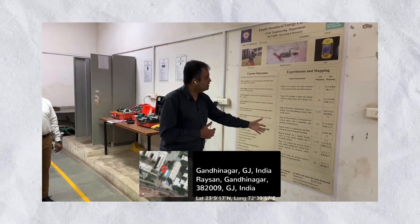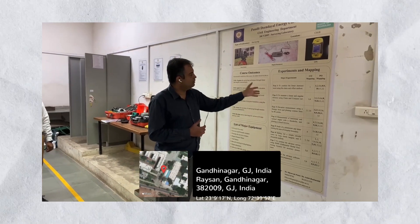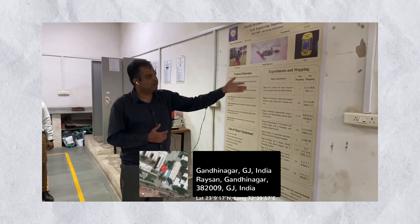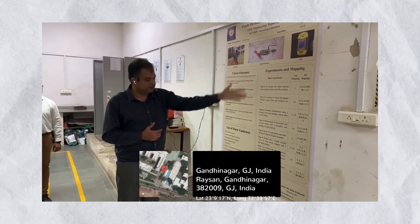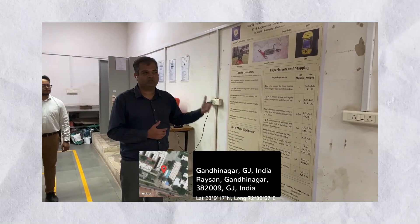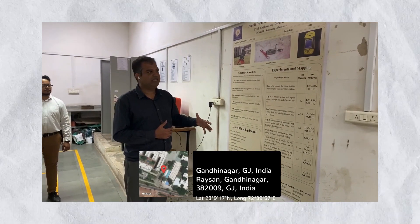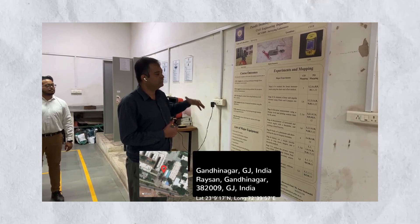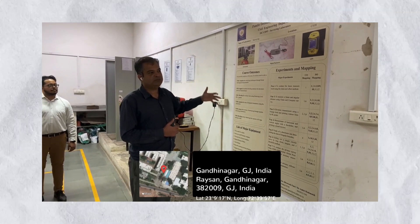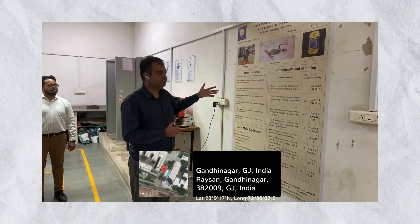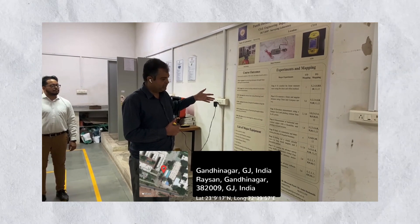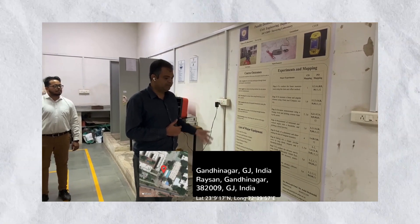Here you can see how the Course Outcomes (COs) have been mapped with each experiment, and how the COs and Program Outcomes (POs) have been mapped and displayed. This is useful to students when they come to class, so they can be familiar with the outcome-based philosophy adopted by the department.